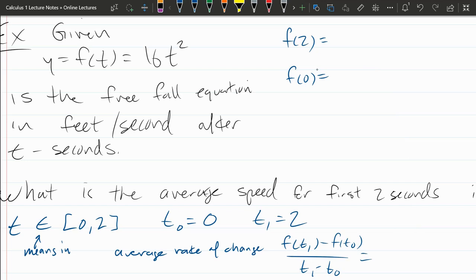This formula is pretty easy to plug into. 16 times 2 squared, 2 squared is 4, times 16 is 64. f of 0, you're going to get 16 times 0 squared, which is just 0.